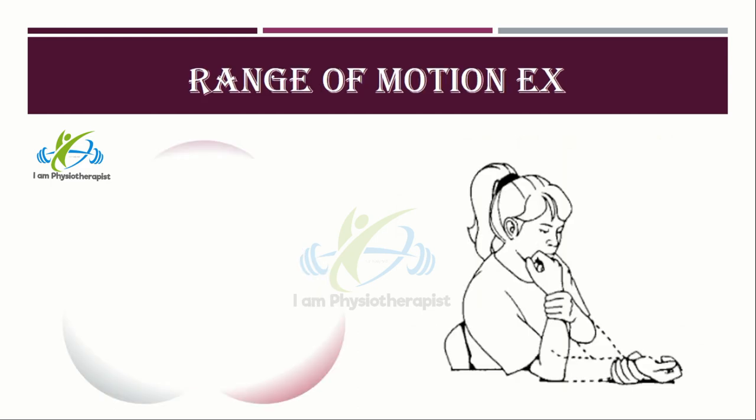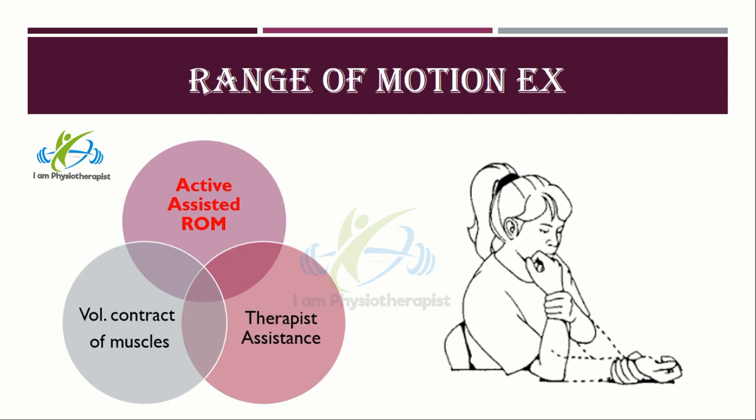Active assisted range of motion exercises include voluntary contraction of muscles controlling a part, assisted by a therapist or by some other means. These exercises are used when the patient has very weak muscles or when joint pain limits movement. During active assisted range of motion exercises, it is important to avoid forcing the joint or soft tissue beyond the point of pain.